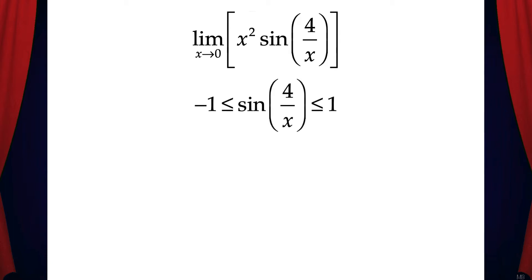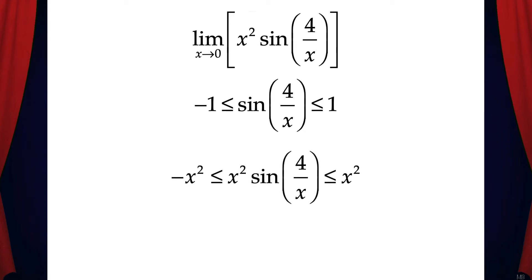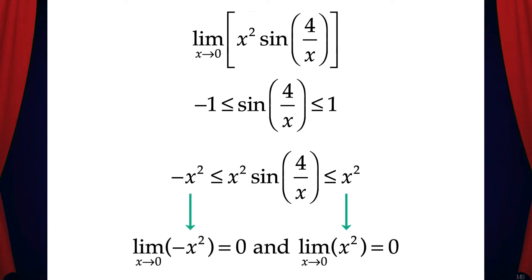The first thing to notice is that sine of (4/x) is always greater than or equal to -1 and less than or equal to 1. If we multiply this entire inequality by x², we get -x² ≤ x²·sin(4/x) ≤ x². Now we take the limit of -x² as x approaches 0, and the limit of x² as x approaches 0, and we can see that these limits are both 0.